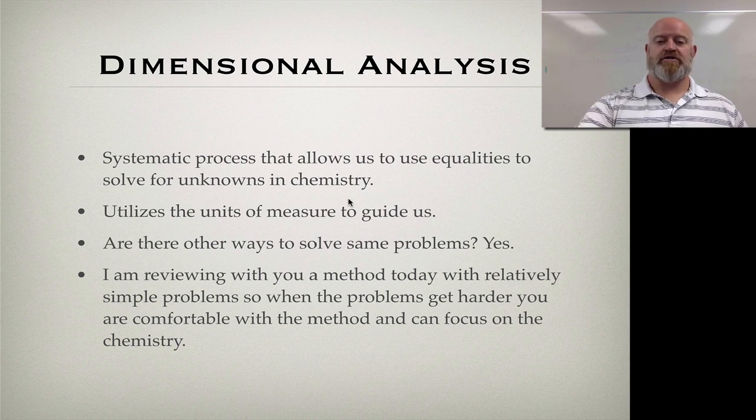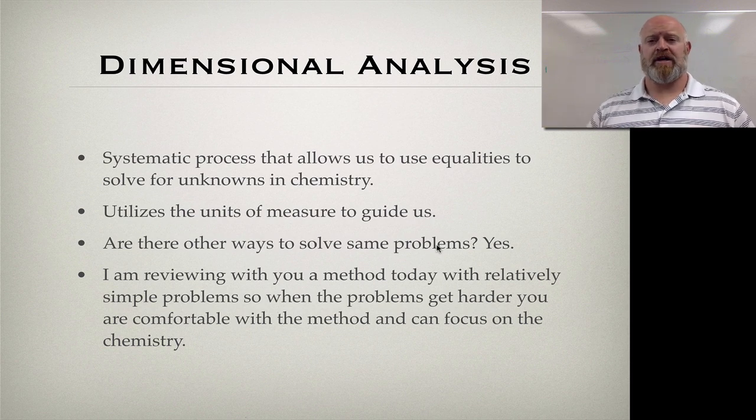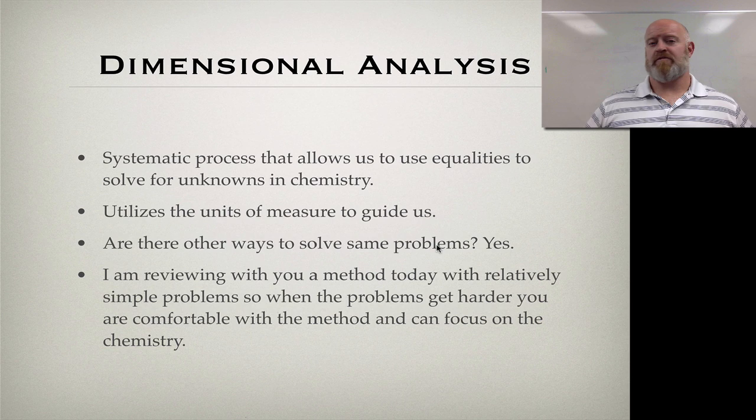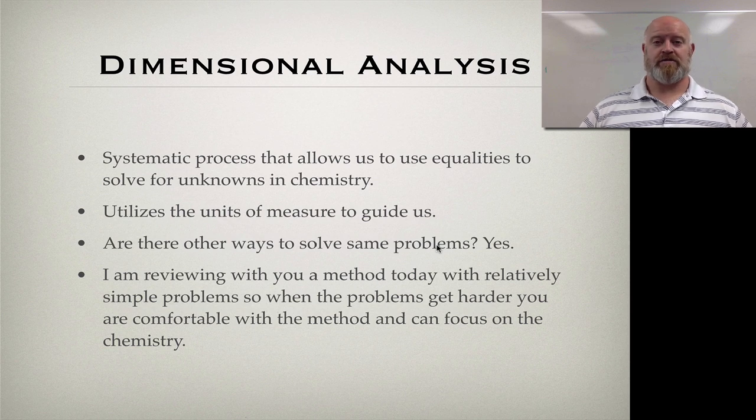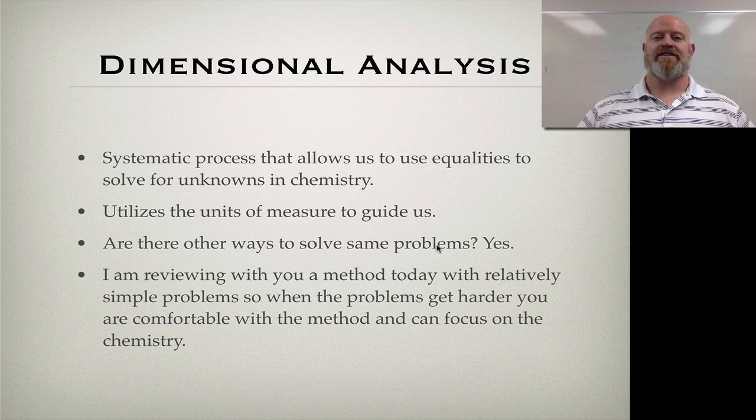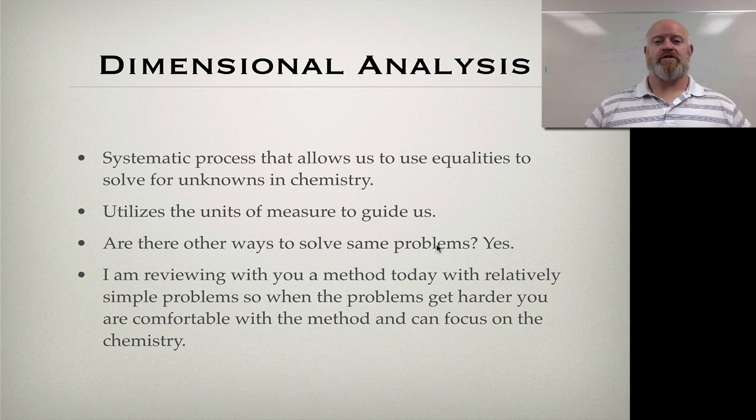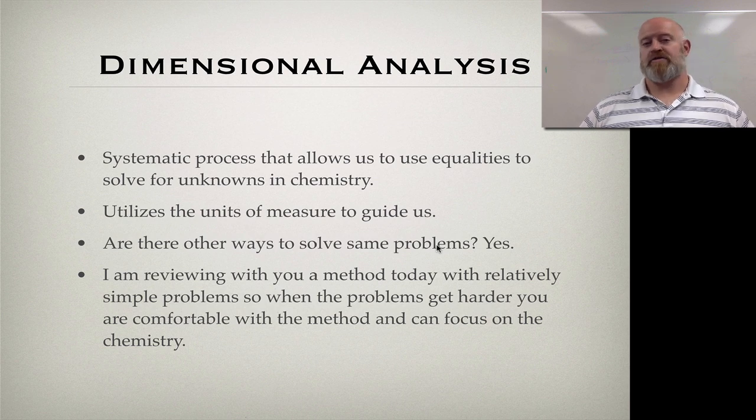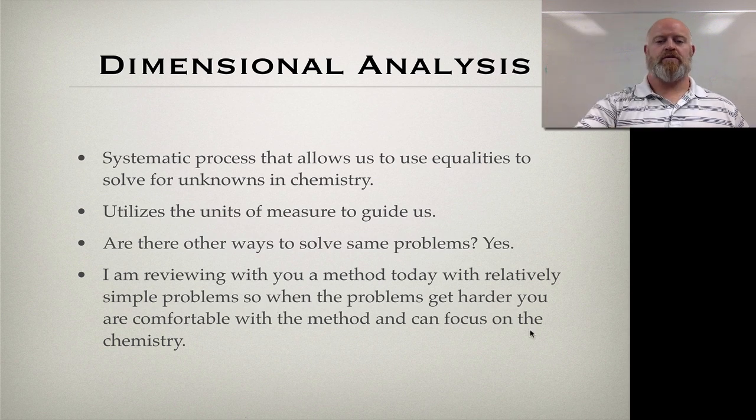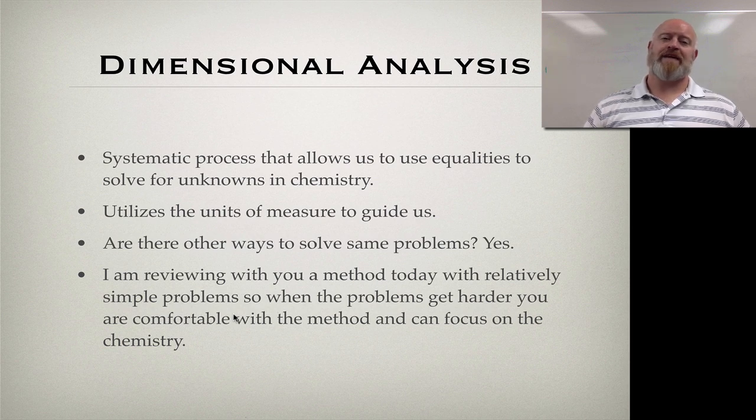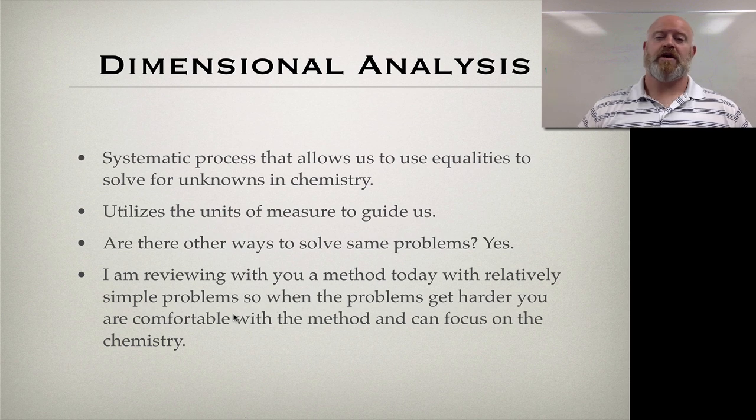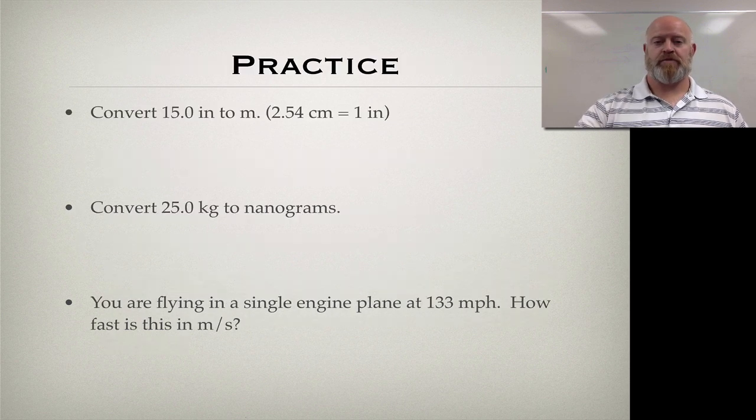Essentially what we're doing in all of our math is using dimensions or units to analyze things and to transition from grams to moles to liters to ounces. We're always converting from one unit to the other, and the most efficient way to do that is through dimensional analysis. It's a systematic process, we're going to use units to guide us. Are there other ways to solve the problem? Absolutely. However, we find that in the world of chemistry, the most efficient way, the fastest way, the way that's going to get you to the correct answer the soonest with the most reliability, is through dimensional analysis.